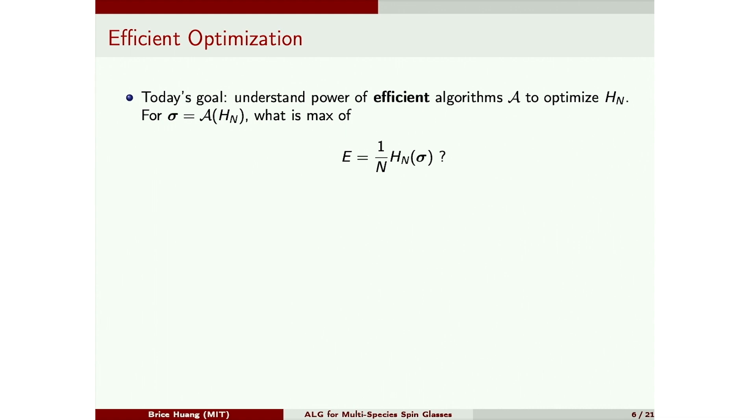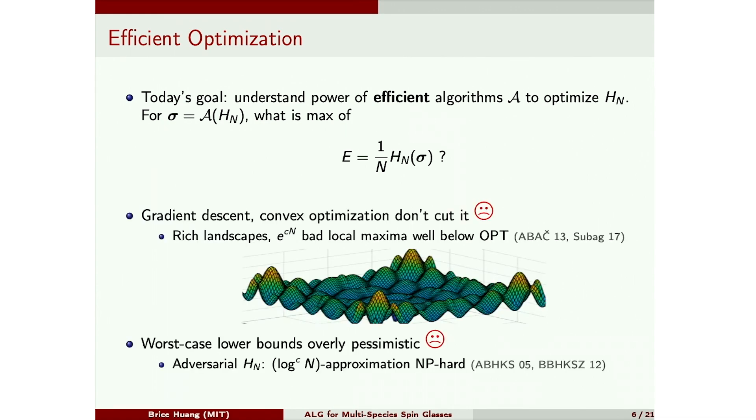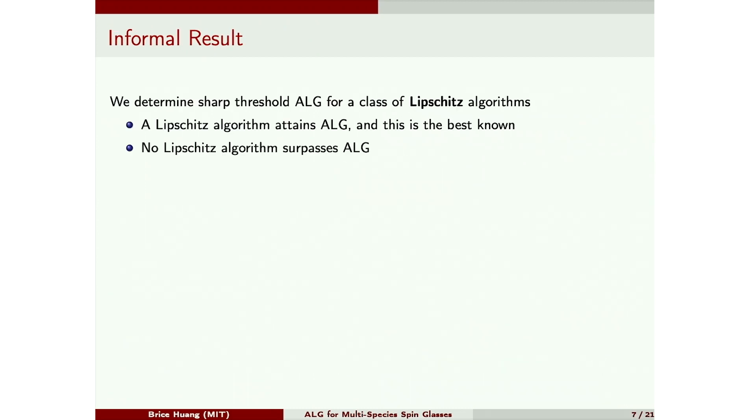This problem has both challenging properties that I mentioned earlier. So these landscapes are very non-convex, with exponentially many bad local maxima appearing well below opt. And this suggests that gradient descent won't be enough. And on the hardness side, worst case lower bounds are indeed overly pessimistic.